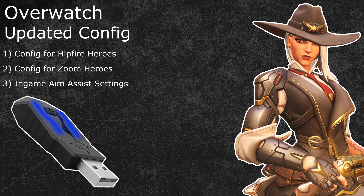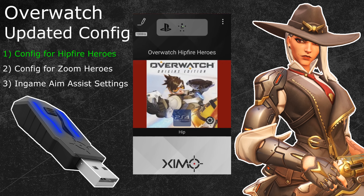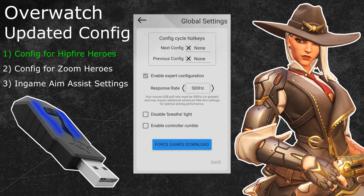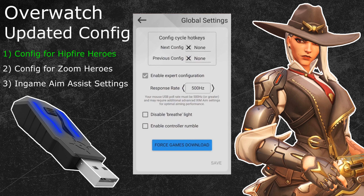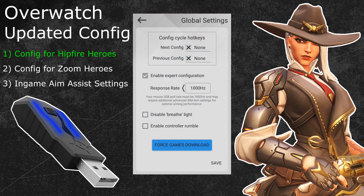How to create a configuration for hip-fire heroes. This configuration is meant to be used for characters that don't have a zoom mechanic — so basically all heroes except for Ana, Widowmaker and Ashe. The first step is to start your Zim manager and connect it to your Zim. Once that is done, click on the options button in the top right and head into the global settings. Here you can adjust your Zim polling rate. Overwatch works best with 1000Hz for both your Zim and your mouse.